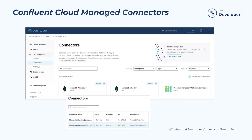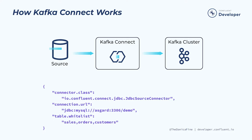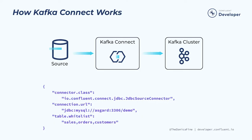In addition to managed connectors, Confluent also provides fully managed Apache Kafka, schema registry, and stream processing with ksqlDB. Kafka Connect runs in its own process separate from the Kafka brokers. It's distributed, scalable, and fault tolerant, giving you the same features we know and love about Kafka itself. But the best part of Kafka Connect is that using it requires no programming — it's completely configuration-based, making it available to a wide range of users, not just developers.